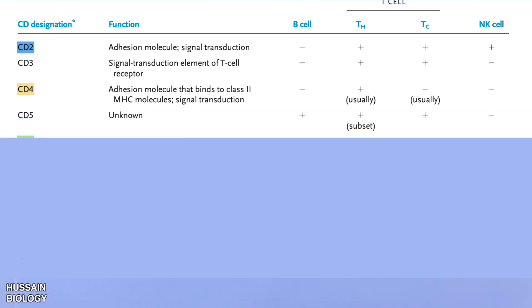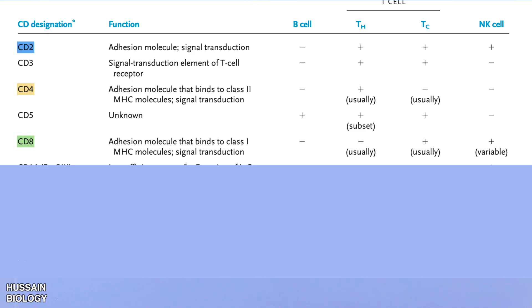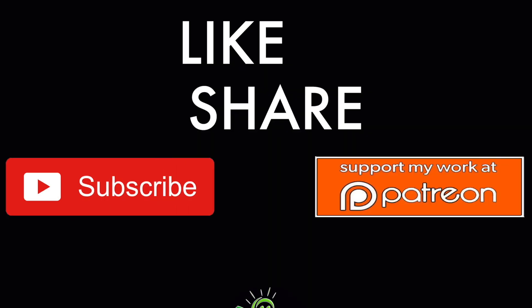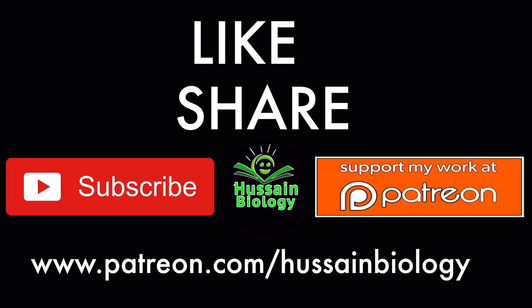CD8 is an adhesion molecule that binds to MHC class I molecules and also aids in signal transduction. CD8 is absent in B cells and helper T cells, but present in cytotoxic T cells and natural killer cells. These are the common CD markers used to distinguish functional lymphocyte subpopulations. If you liked the video, give it a thumbs up, consider supporting on Patreon or YouTube, and make sure to subscribe.